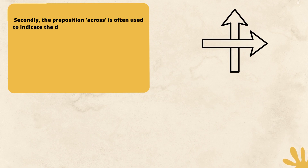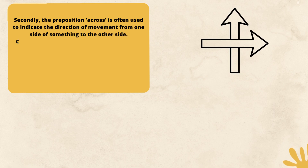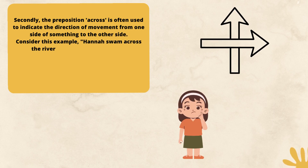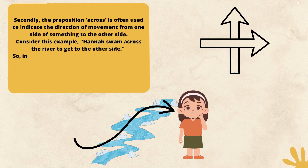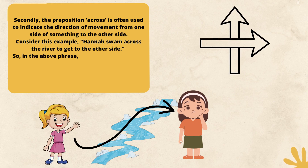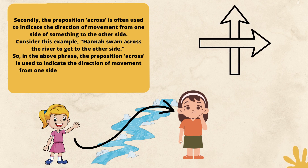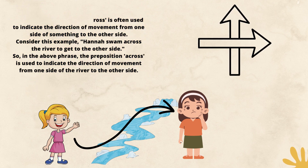Secondly, the preposition 'across' is often used to indicate the direction of movement from one side of something to the other side. Consider this example: Hannah swam across the river to get to the other side. In the above phrase, the preposition 'across' is used to indicate the direction of movement from one side of the river to the other side.